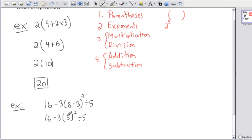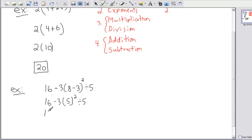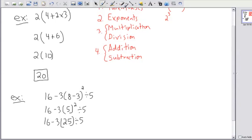So I'm going to take care of the exponent. 5 squared. Now this is not 5 times 2, this is 5 times 5. So in this case, then I have 16 minus 3 times, and what's 5 times 5? 25. Divide that by 5, of course. Now I'm done with my parentheses and my exponents.